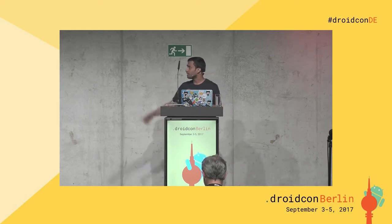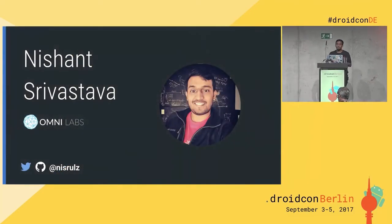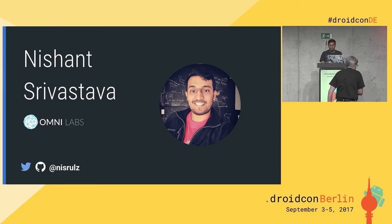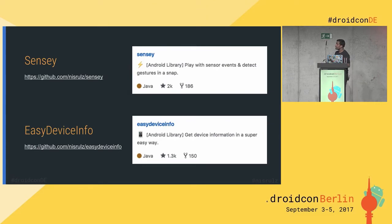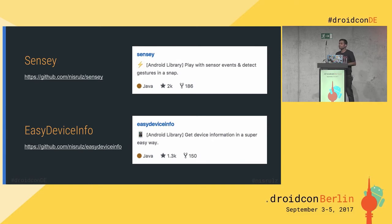You can find me at my Twitter and GitHub handle — that's N-I-S-R-U-L-Z. While at work and in open source, I've built a lot of libraries. Two that I'm really proud of are Sensi and EasyDeviceInfo. Sensi is a basic Android library that makes detecting gestures — such as wrist twist, shake detection, tilt, or rotation — super simple.